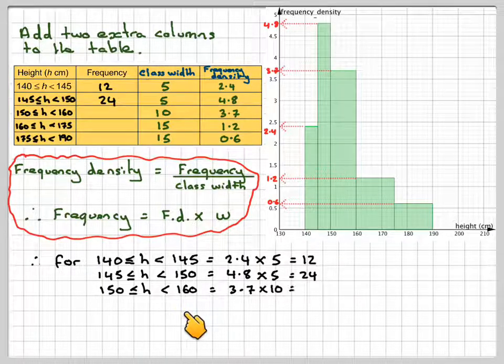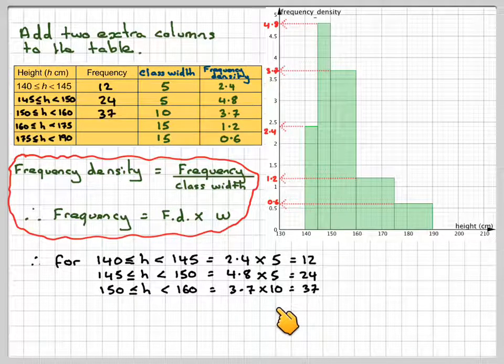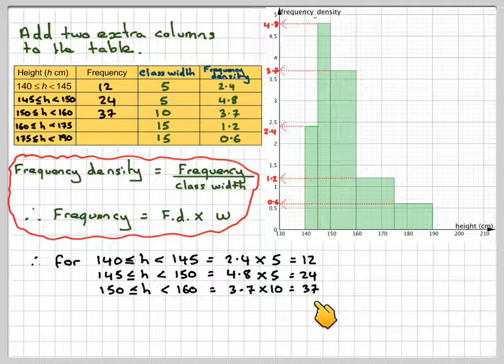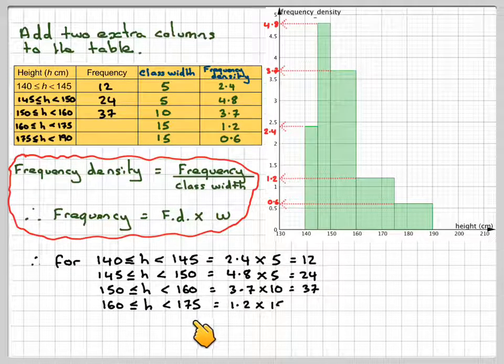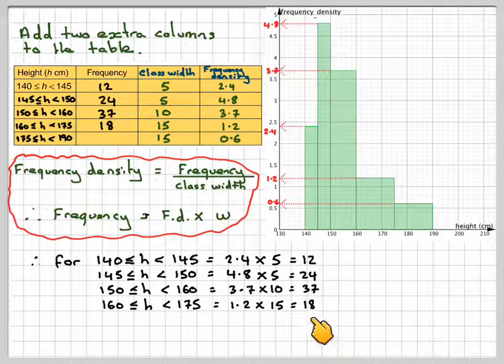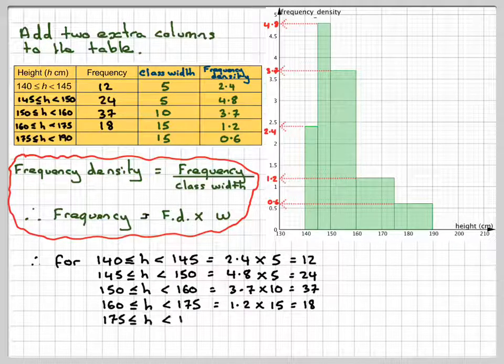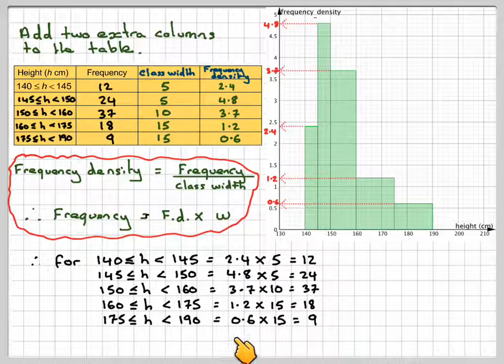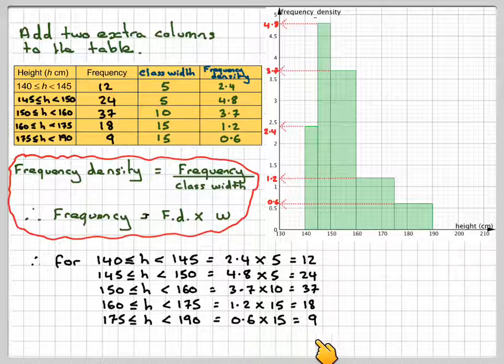From 150 to 160, that's 3.7 times 10, because the class width is 10, which equals 37. From 160 to 175, that's 1.2 times 15, which is 18. And from 175 to 190, that's 0.6 times 15, which is 9.